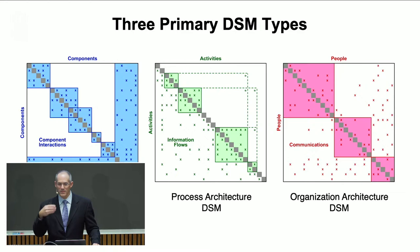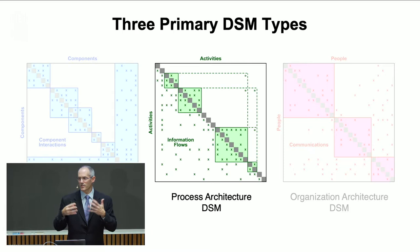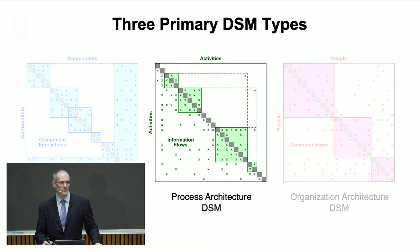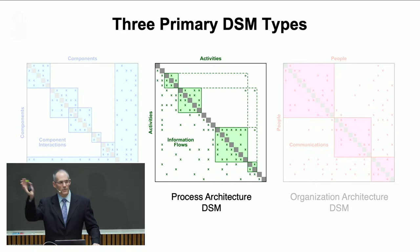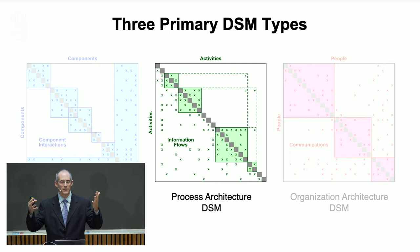The process domain looks at how an engineering process works. You'd expect to see design tasks like design the product, design the circuits, create the software. There would also be market-oriented tasks like figure out who the customers are, what's our target market, what's our price point. We would have testing and integration tasks like test the product, and feedback — after we test it, do we have to redo the design, change manufacturing, or change the prototype?